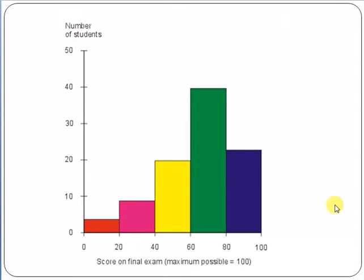The histogram tells you the data and the mapping of variables, giving you a graphical representation. This is useful when analyzing scope documents, preparing business analysis documents, or preparing status reports for management. You can use Microsoft Excel bar charts to easily plot a histogram.